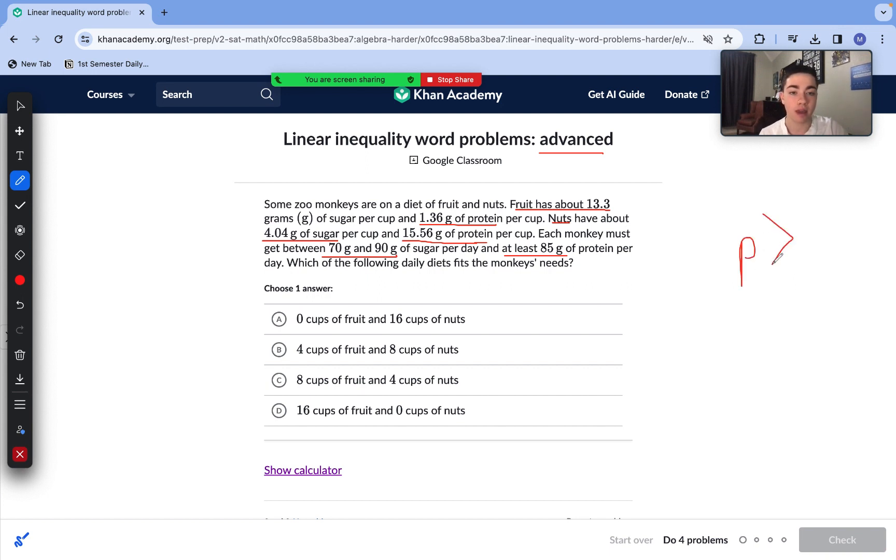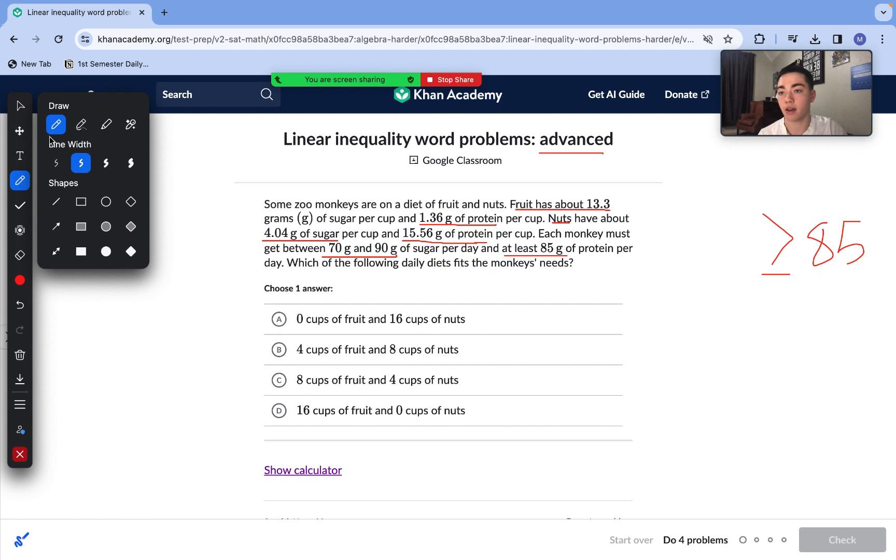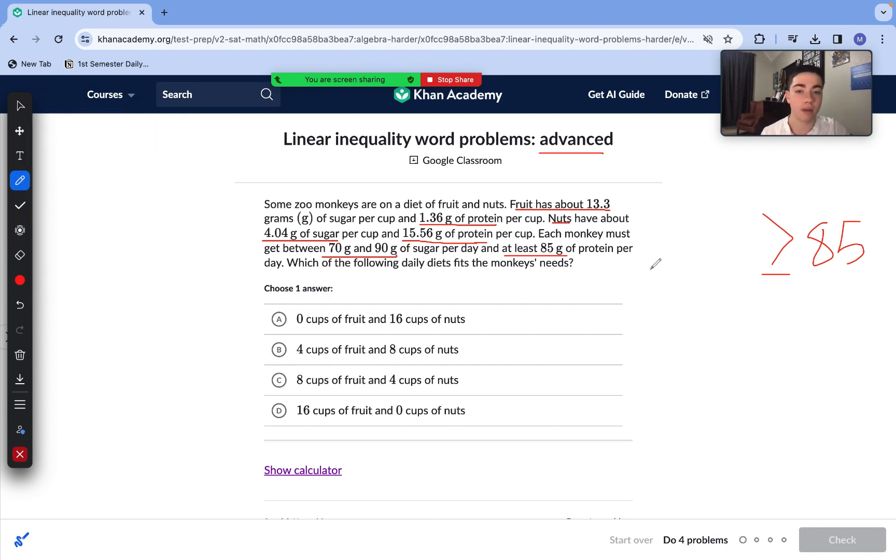So our protein we know needs to be above 85 and how we find our protein is by multiplying the cups of nuts by 15.56 and fruits by 1.36. Our protein inequality is 1.36F plus 15.56N must be greater than or equal to 85. Now with our next inequality relating to sugar, we know it needs to be greater than 70 but still less than 90. We have 13.3F, that's the amount of sugar in fruit, and then we have plus 4.04N, the amount of sugar in our nuts.